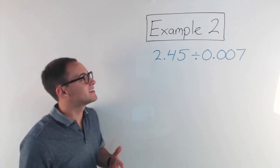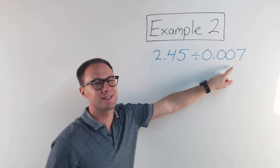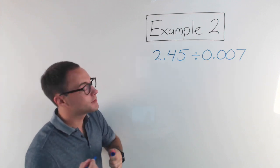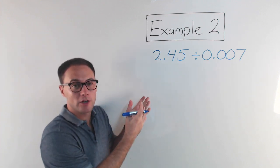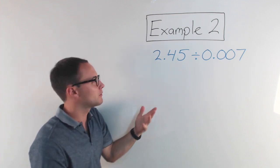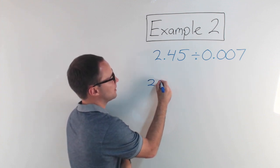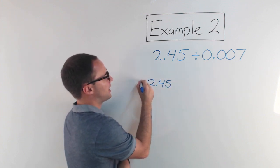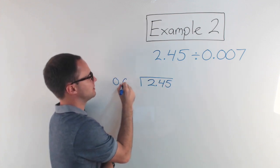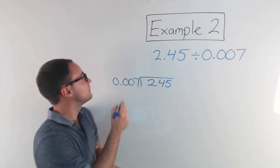Here's our second example: 2.45 divided by 0.007, or 7 thousandths. Again, the first thing we're going to do is rewrite it in long division form instead of like this. So 2.45 is being divided by 0.007. That's your first step — rewrite it.